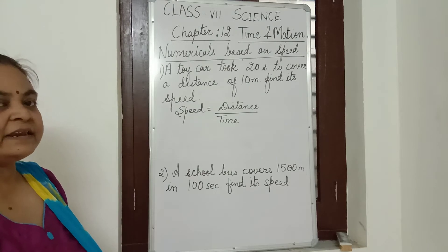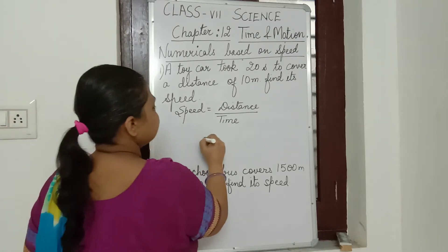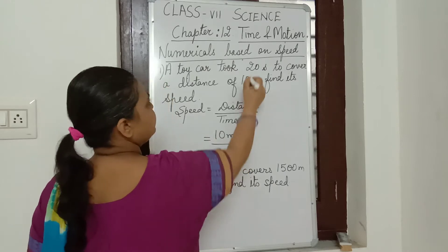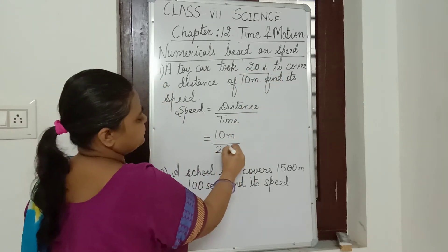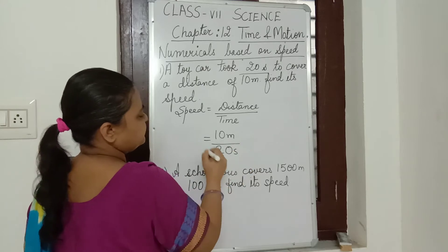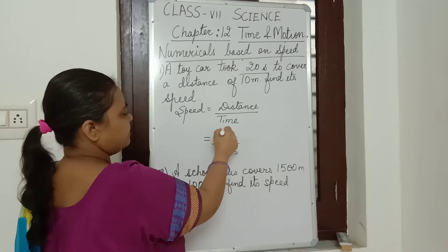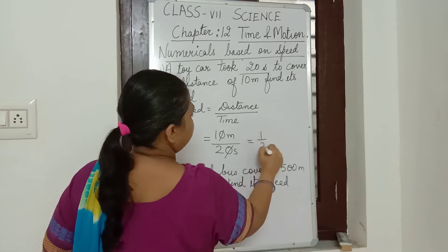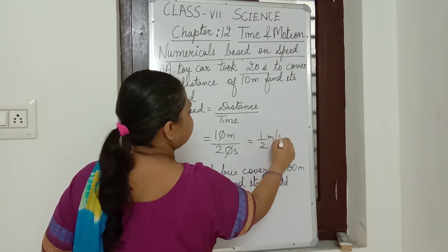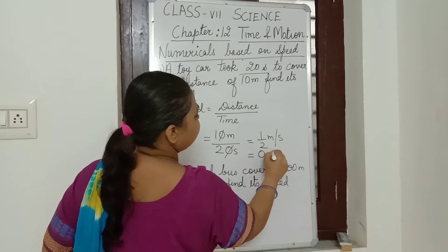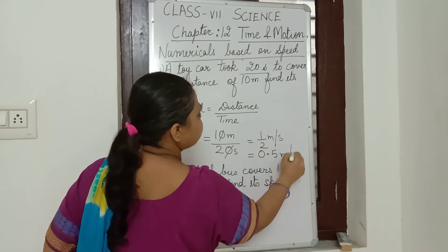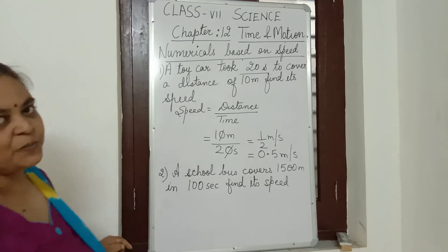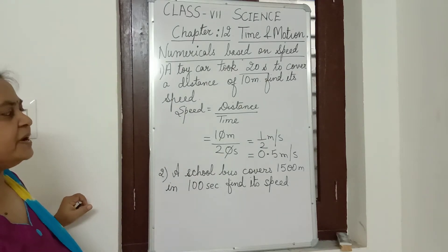Now how much is the distance here? Distance is 10 meters. And time taken is how much? 20 seconds. So after dividing 10 by 20, we get 0.5 meter per second.